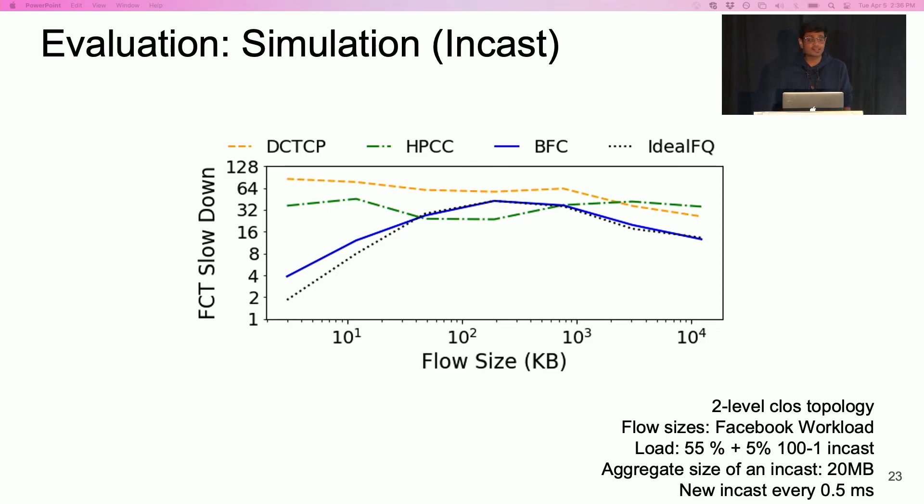As a result, the latency of short flows deviates from ideal FQ. However, notice that this deviation from optimal is still small. There's actually a subtle reason for why this deviation is small. In the interest of time, I'll skip it.